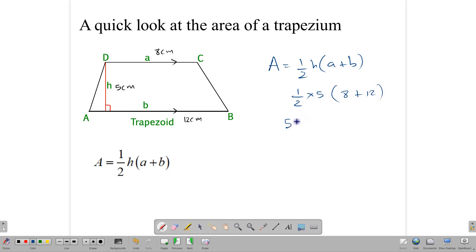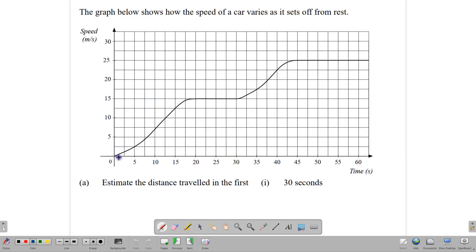8 plus 12 is 20, so we have 5 times 20 over 2. 5 times 20 is 100, and 100 divided by 2 gives us 50 centimeters square. So that's the area of our trapezium. It's important that we review this because the area of a trapezium relates directly to the trapezium rule. Now let's move on to a question that requires us to apply this.